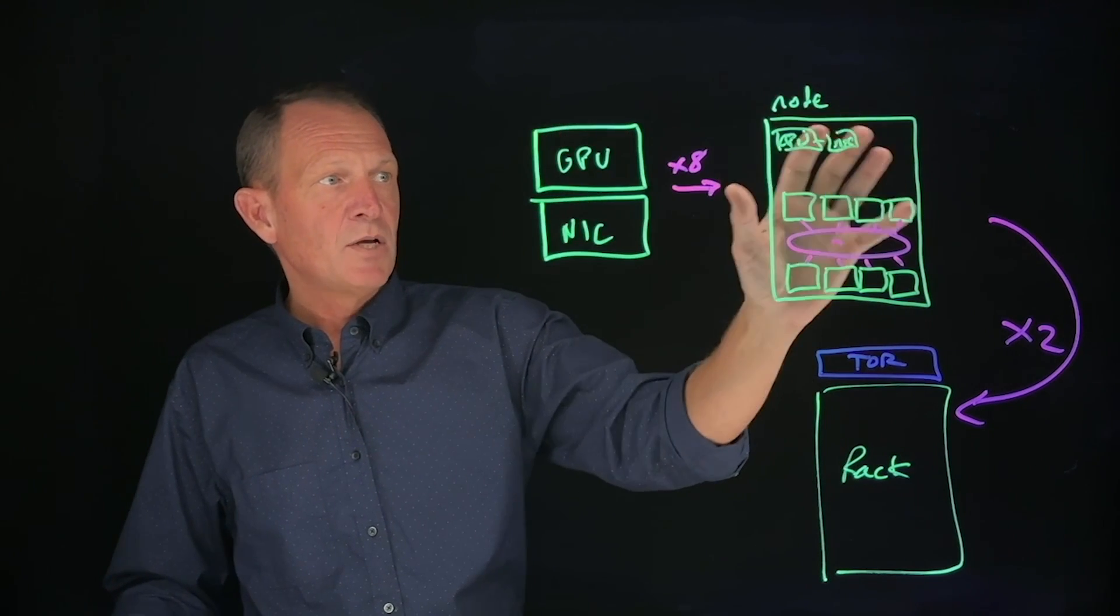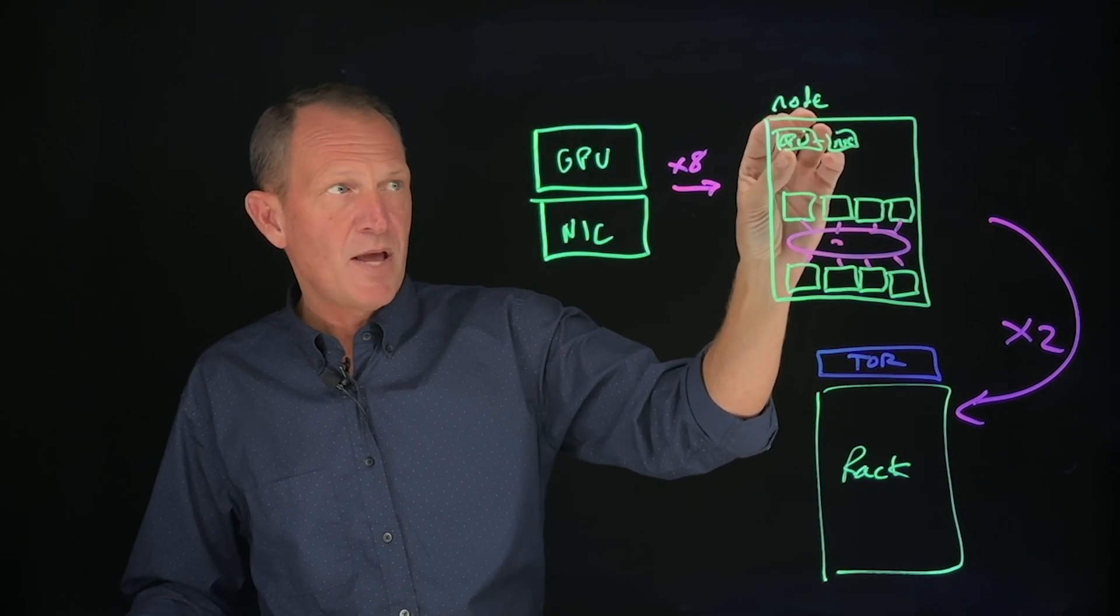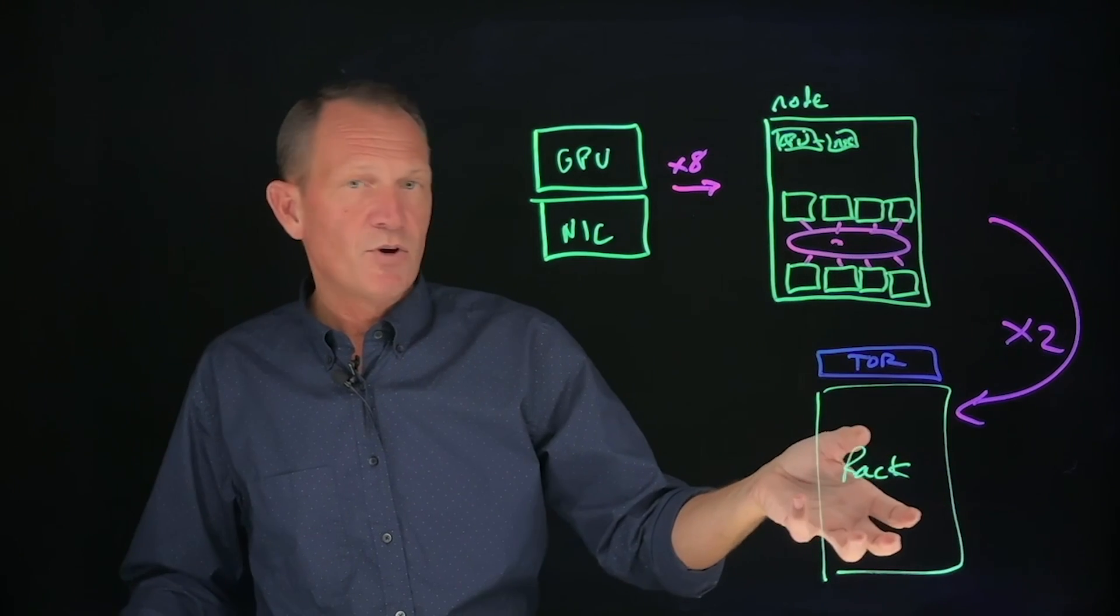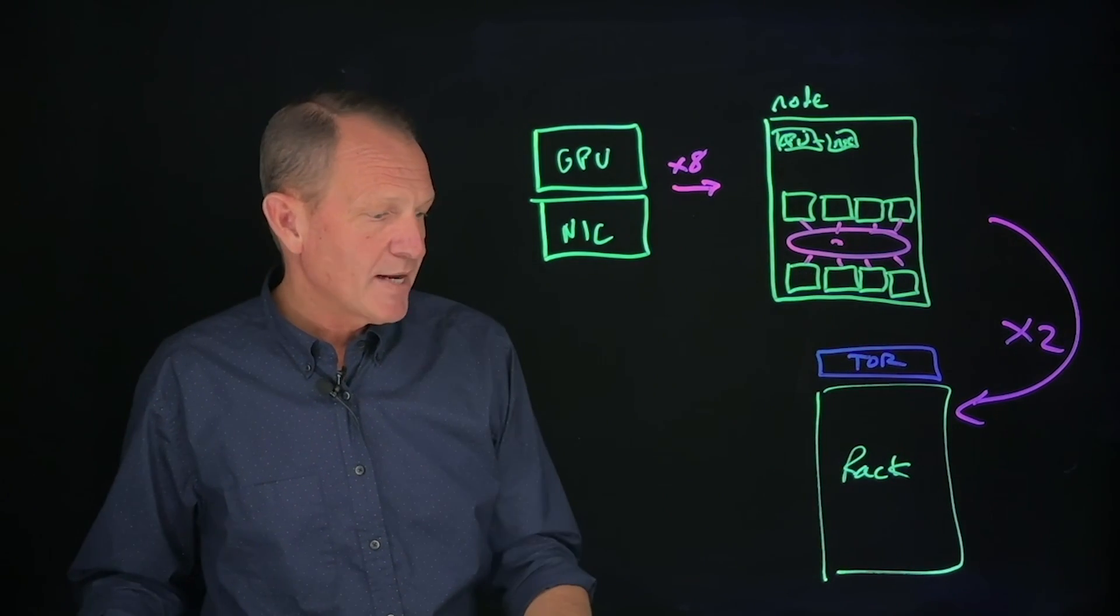We go from GPU-NIC, put eight of those combinations in a node with some associated management infrastructure, take two of those and put them in a rack, then have some connectivity on top.